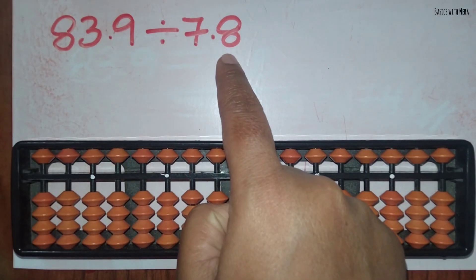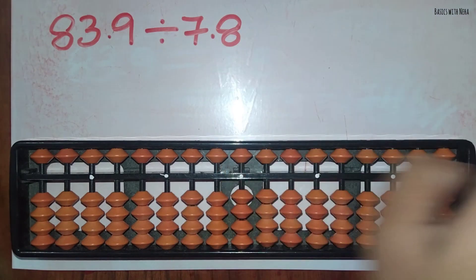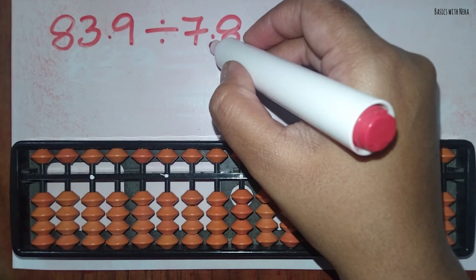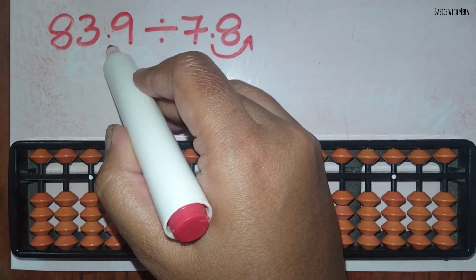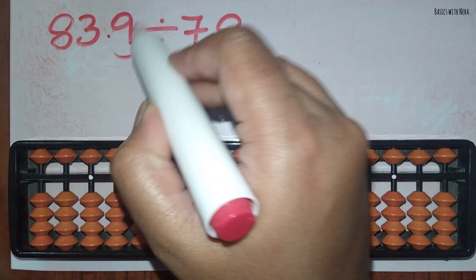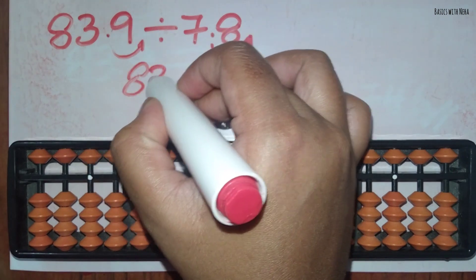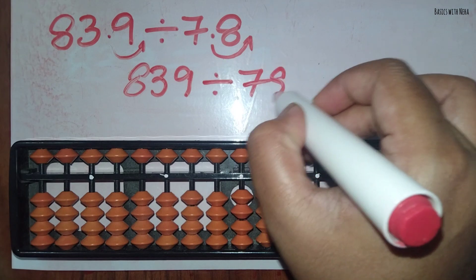83.9 divided by 7.8. Since we have a decimal in the divisor, we have to remove the decimal, so we are going to move this decimal one place to this side. Since we have moved one place here, we should also be moving one place there. So the new question formed is 839 divided by 78.